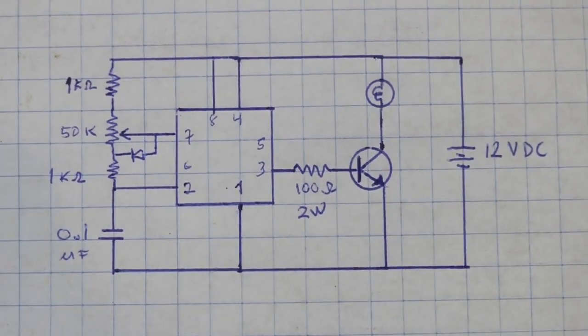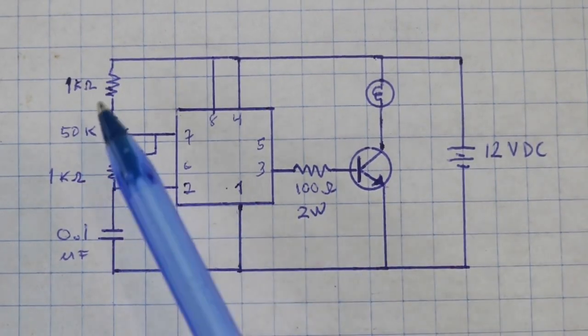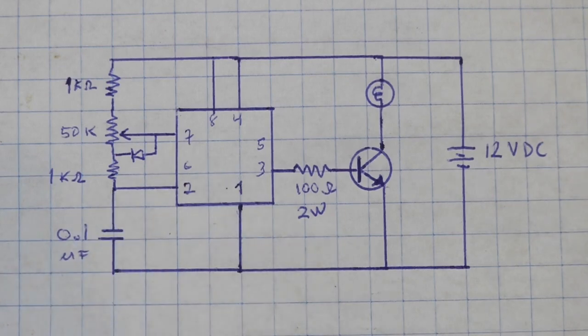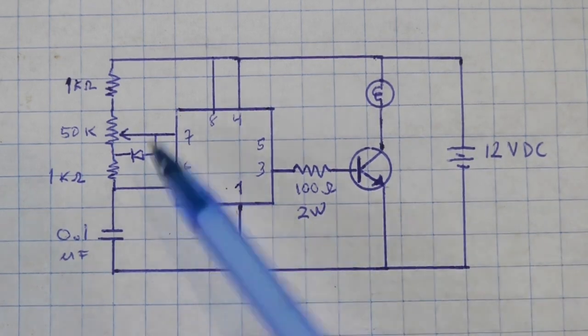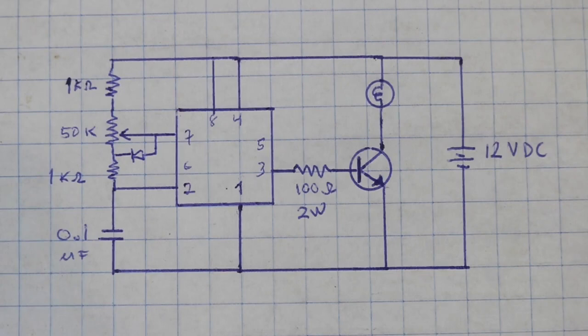This is the schematic. All the components are marked with their values. The transistor is an NPN transistor. I am using the TIP 35C but you can use any NPN power transistor, and this diode here is a common rectifier. Any rectifier diode will work.